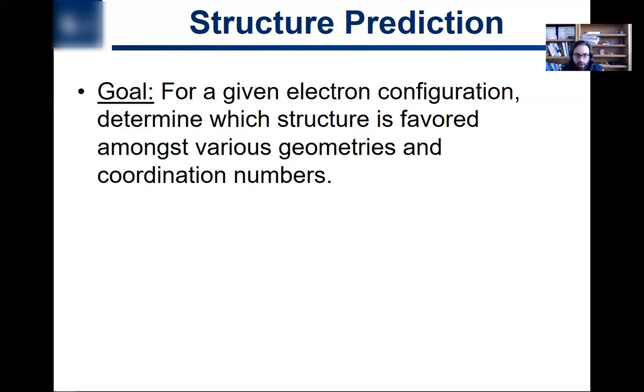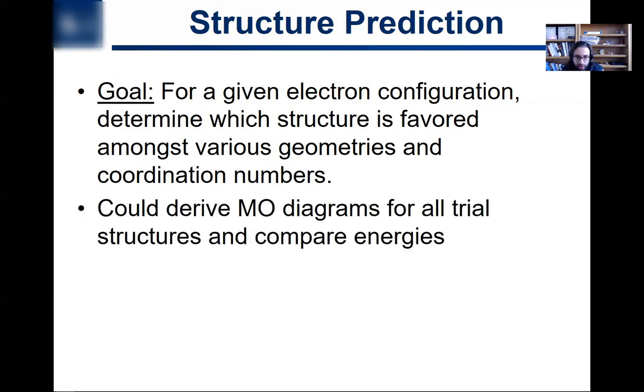And we're going to want to know what structure is favored for transition metal complexes across various geometries and various coordination numbers. One approach would be to derive the MO diagrams for all these different trial structures and then try to come up with trends and compare their energies. This is possible, but it'd be quite time-consuming.